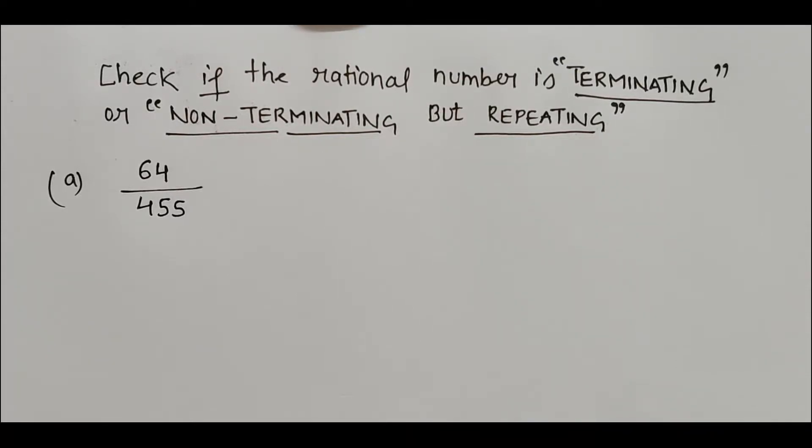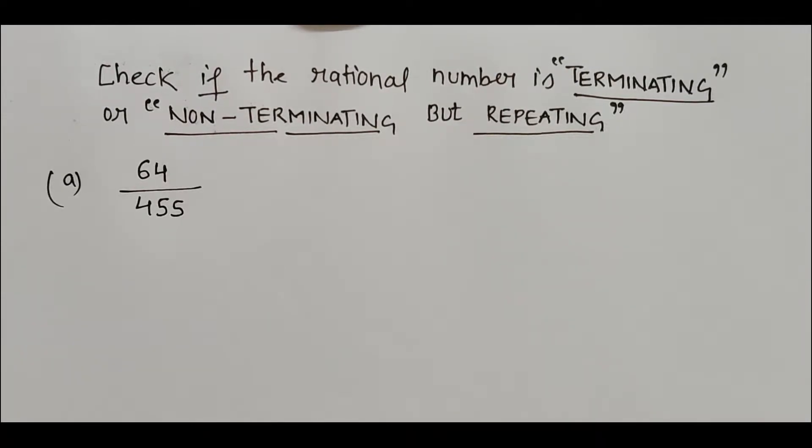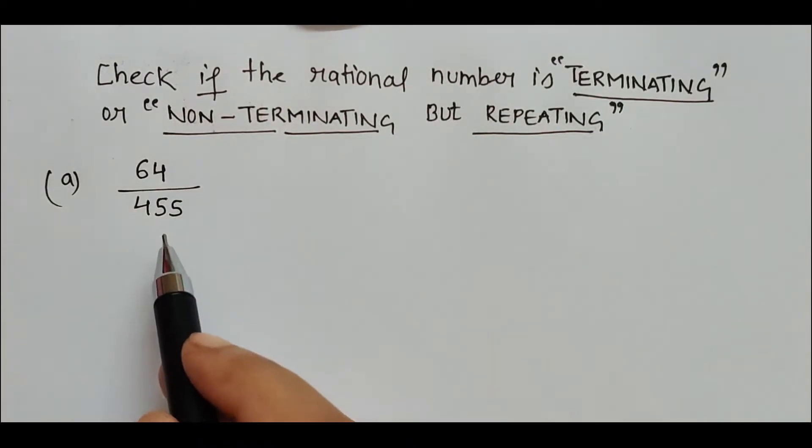Hello friends, in this video we are going to see two examples which will be either terminating or non-terminating but repeating. Let's see how to check that. Here the rational number is 64 upon 455.